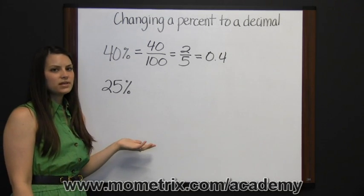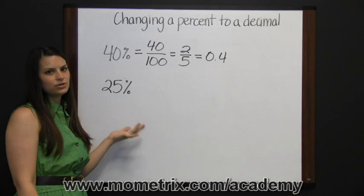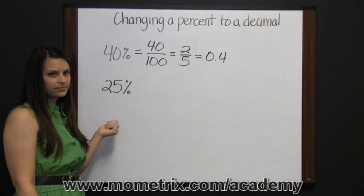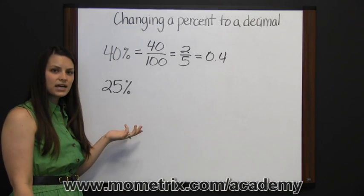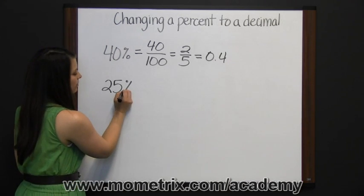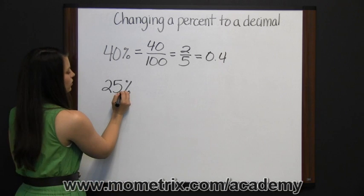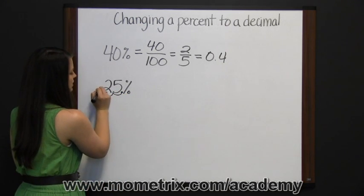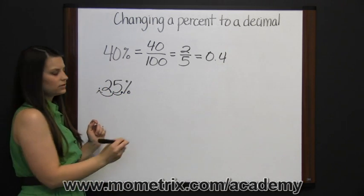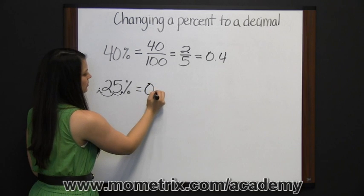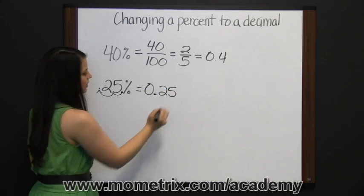So we're supposed to move the decimal place two places to the left, but where is it? If you don't see a decimal point in your number, it's at the end of your number. So there's our decimal point that we're going to move one, two places to the left, which gives us twenty-five hundredths.